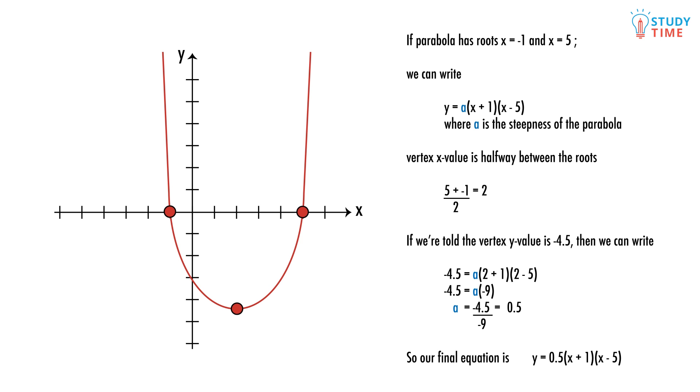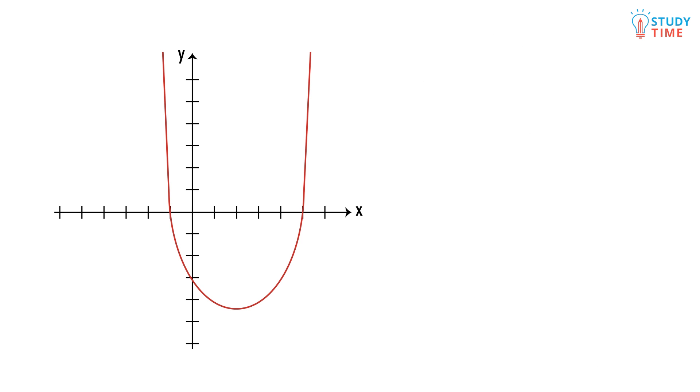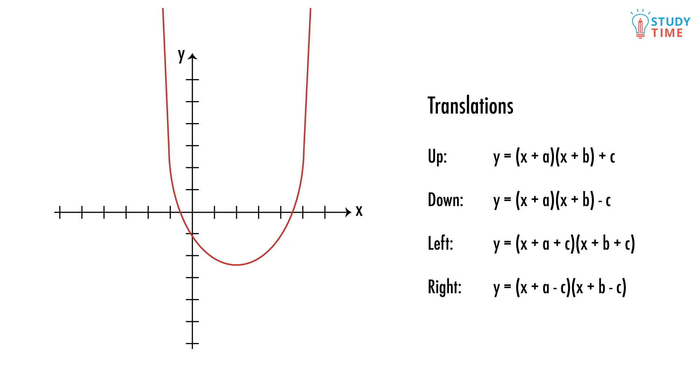The second method we'll cover later. When we want to translate a parabola, we do the same thing we did for linear graphs. We can move this parabola up by two units by making the equation y equals 0.5 times (x plus 1) times (x minus 5) plus 2. What if we wanted to move a factorized parabola left or right? Look at our roots.